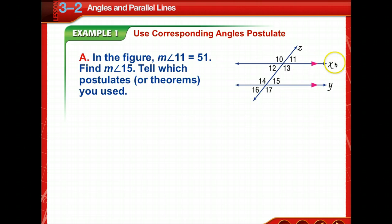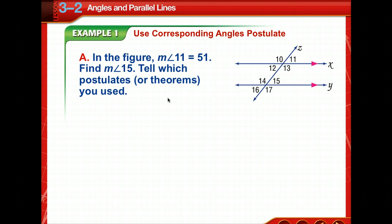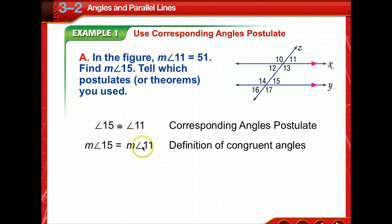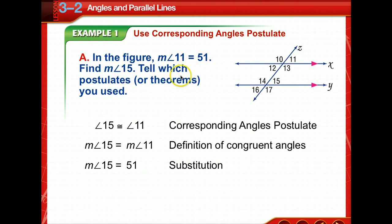In Example 1, we're given two parallel lines — notice they're marked — and we're told the measure of angle 11 is 51. We need to find the measure of angle 15 and tell which postulates or theorems are used. So it's like a two-column proof. Angle 15 is congruent to angle 11 by the Corresponding Angles Postulate. Their measures are equal by the definition of congruent angles. By substitution, the measurement of angle 15 is 51.